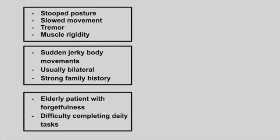Next is a patient with a stooped posture, slowed movements, a tremor, and muscle rigidity. This is Parkinson's disease. Parkinson's disease is a problem with dopamine production in the substantia nigra. There is a buildup of alpha-synuclein which kills off the dopamine-producing cells.